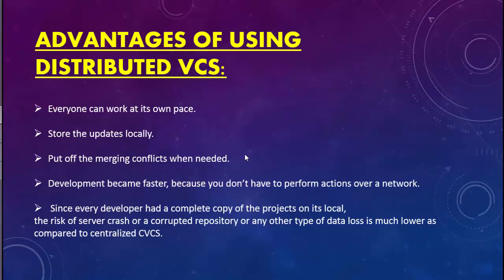There are a lot of advantages of using a Distributed VCS over a Centralized VCS. Everyone in the team can work at their own pace, store updates locally, keep making changes, and once they're ready and fully tested, check in their changes. Development is much faster because you're not making changes on a central machine — you're working on your own box, not talking over the internet. Because every developer has a complete copy of the project locally, the chances of data loss from a server crash or corrupted repository are very, very low.